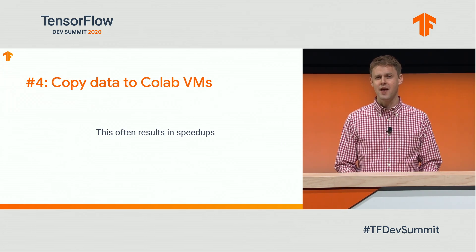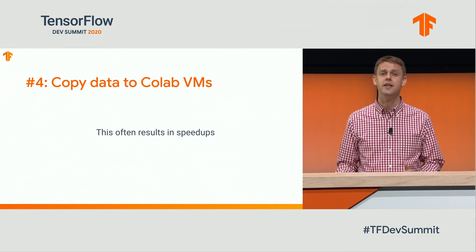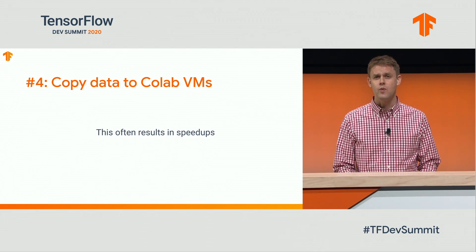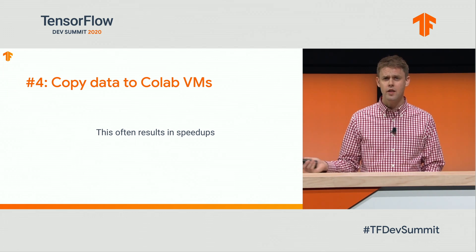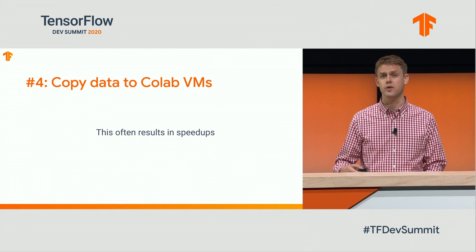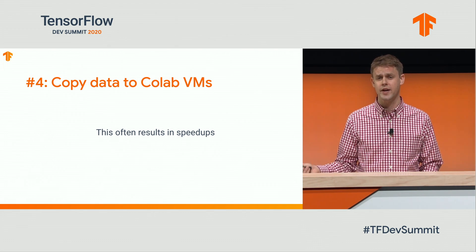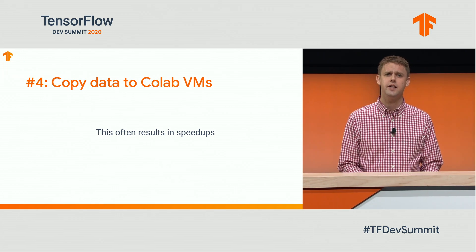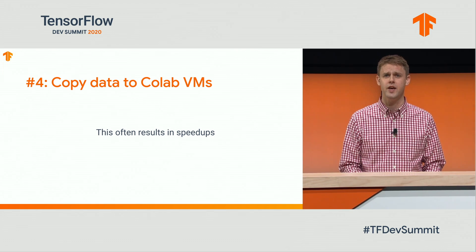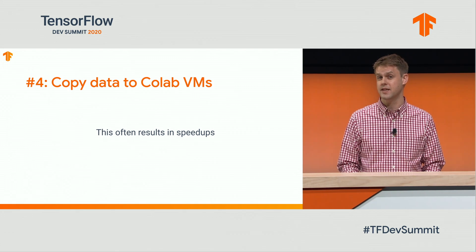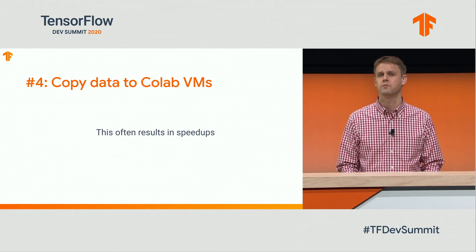Number 4: copy your data into your CoLab VM. Rather than calling data on external storage at runtime when you're training your models, first copy all your data into the CoLab VM. This can result in speedups, even if you're only going to use the data once.